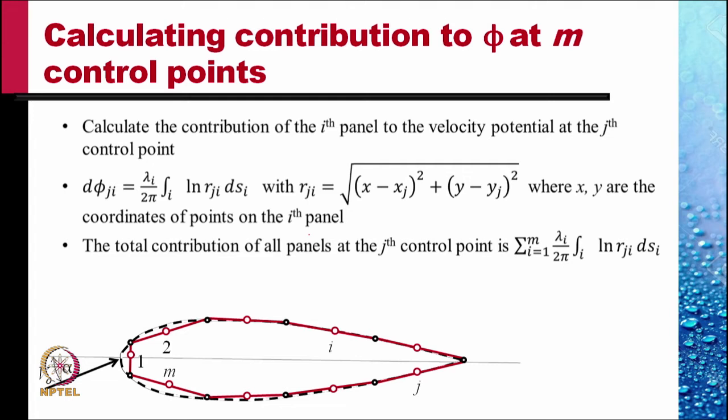How do we do this? We calculate the contribution of the ith panel to the velocity potential at the jth control point. That is, we find delta phi j i at the jth control point because of i equals lambda i, the strength of the ith panel, divided by 2π times integration over i of ln r j i ds i.